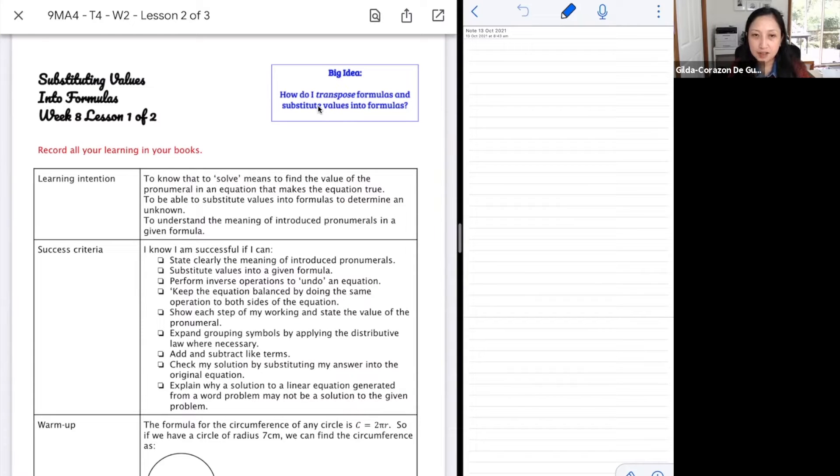We want a variable or one of the variables isolated or by itself, most of the time on the left hand side. So these are our learning intention and success criteria. We'd probably see some of the practical uses of algebra with this one, because that's when we would be using them for measurements. So just like with measurement formulas that we would be using, this would be a useful skill for that.